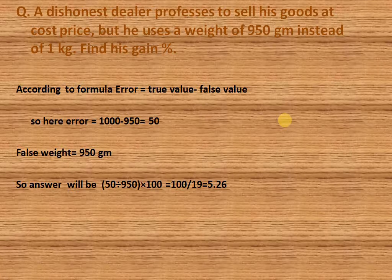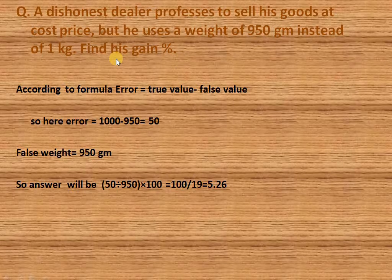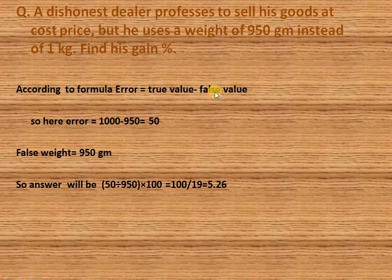According to the question: a dishonest dealer professes to sell his goods at cost price, but uses a weight of 950 grams instead of 1 kg. Find his gain percentage. According to the formula, error equals true value minus false weight. Here, true value is 1 kg and false weight is 950 grams.